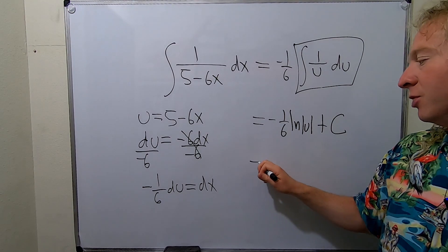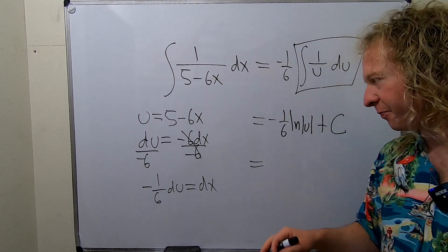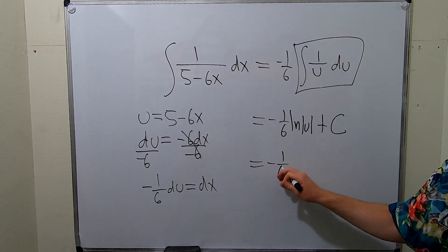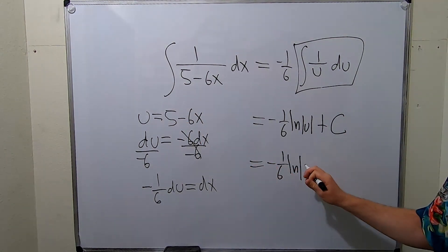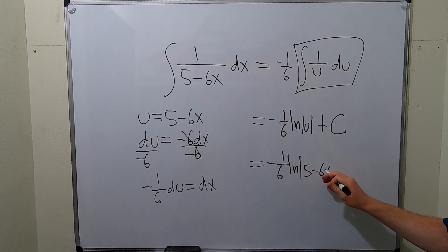The last thing to do is replace u with what it actually is. So this is negative 1 sixth natural log, don't forget the absolute value, then 5 minus 6x. So 5 minus 6x absolute value, and then we still have the plus and the c.